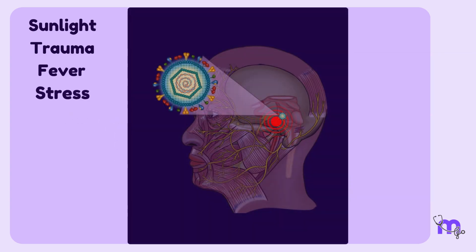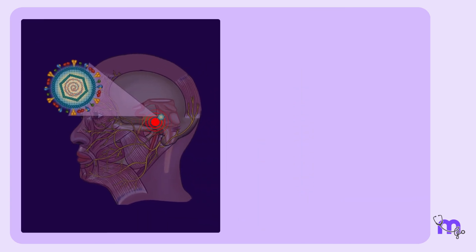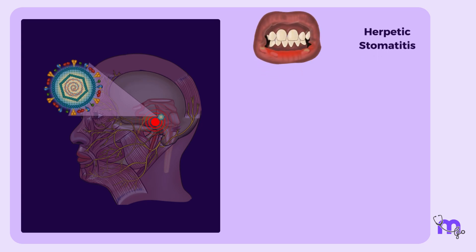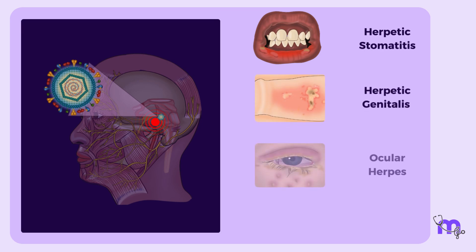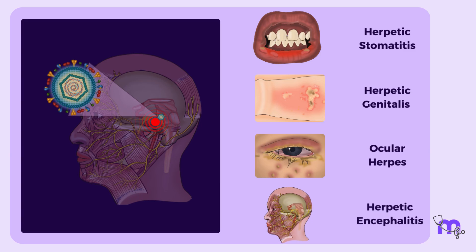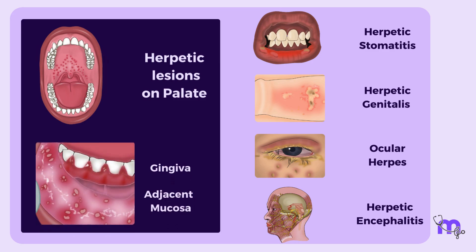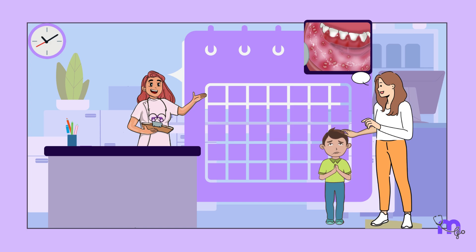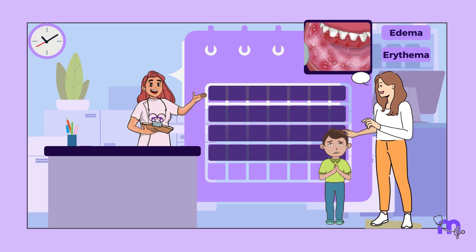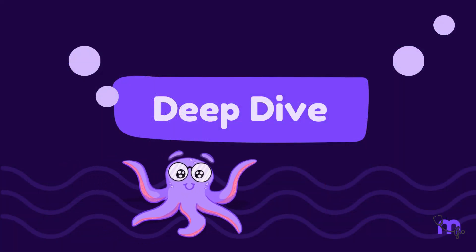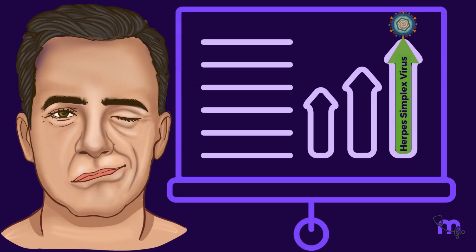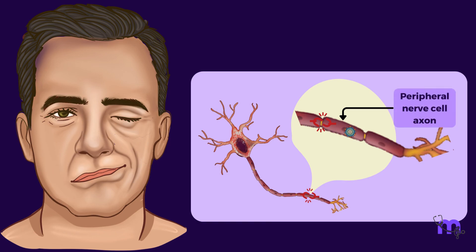and stress can trigger the latent virus and lead to secondary manifestations such as herpetic stomatitis, herpetic genitalis, ocular herpes, and herpetic encephalitis. They can also be seen on the palate, gingiva, or the adjacent mucosa. The course of the disease is limited to 7–10 days, but gingival edema and erythema may persist for several days even after the ulcers heal. A large percentage of Bell's palsy cases may be caused by herpes simplex virus, occurring when the peripheral nerve cell axon ruptures where the HSV resides.